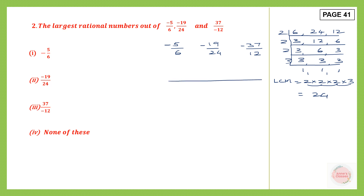Now let's use the LCM as a common denominator and get the new numerators. The first rational number: 6 fours are 24, so multiply minus 5 into 4 — minus 5 into 4 is minus 20. The next one: it is 24 and the LCM is also 24, so into 1 — minus 19 into 1 is minus 19. Then we have 12 as the denominator: 12 twos are 24, so minus 37 into 2 is minus 74. So now we have minus 20 by 24, minus 19 by 24, and minus 74 by 24. Which of these is the largest rational number?